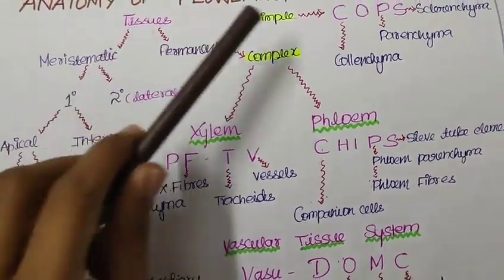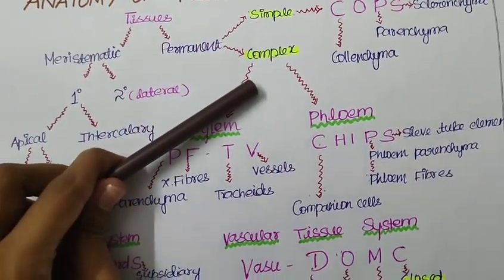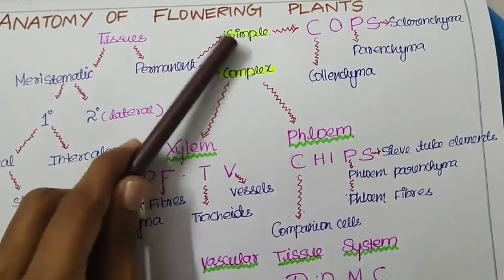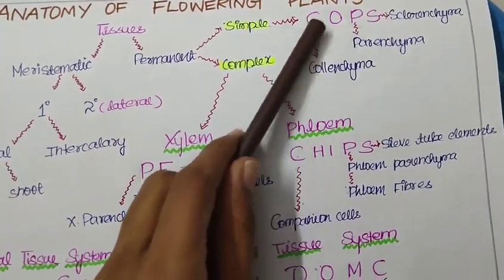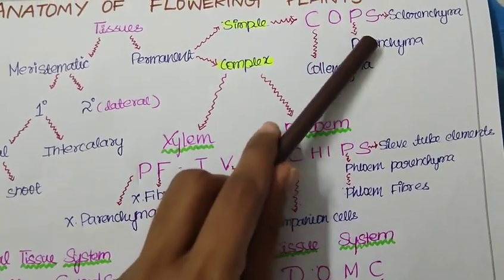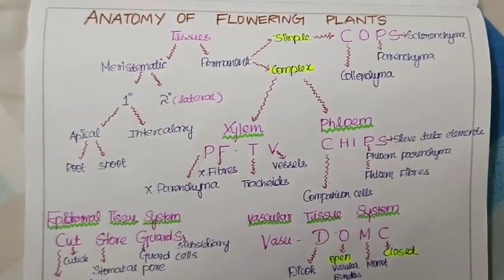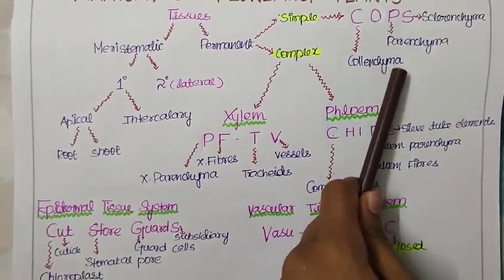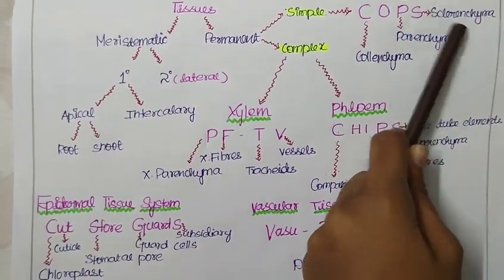Now to talk about the permanent tissue, we have simple and as well as complex tissue. In simple we have further three subdivisions which is given by COPS. COPS means police. The short trick will be COPS. Here the C stands for collenchyma, P for parenchyma and S for sclerenchyma as well as simple.